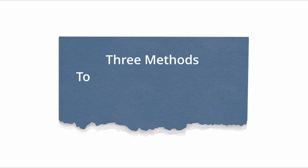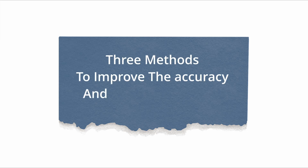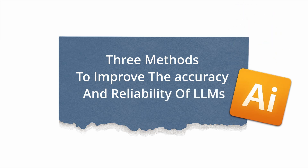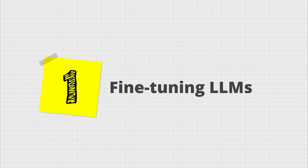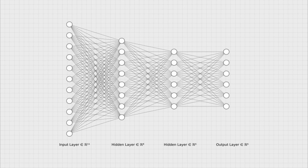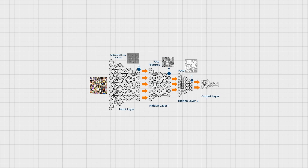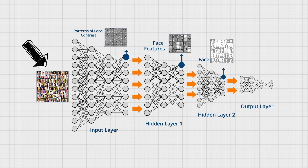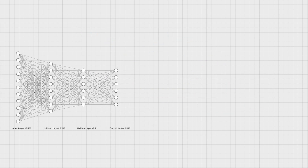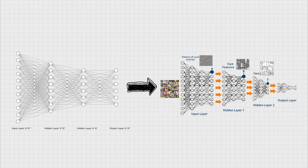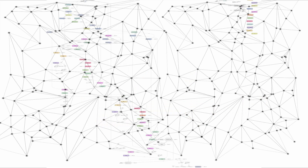There are three main methods you can use to improve the accuracy and reliability of the responses of any generative model such as large language models. The most widely used method is fine-tuning a pre-trained model as a way of post-training or additional training with specific data for specific use cases. This is a way of reusing the same model and redirecting it to respond to specific queries instead of building a new model from scratch.